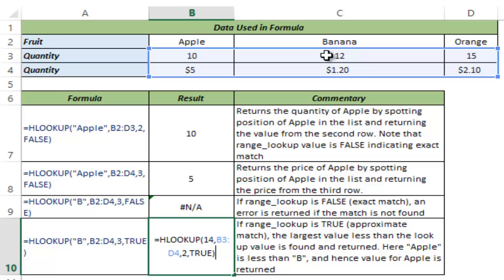So it goes here and it finds that 15 is greater than 14. So it goes back to the last value which is smaller than the lookup value which is 12 and it returns the value against 12 from the second row. So this is how HLOOKUP approximate works.